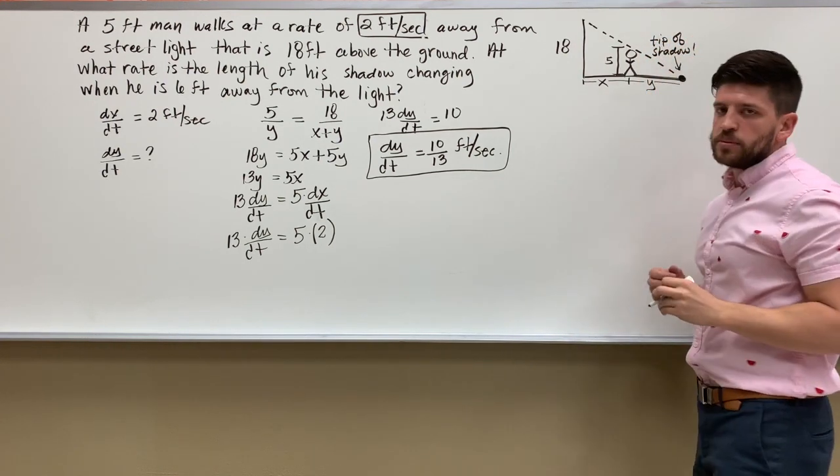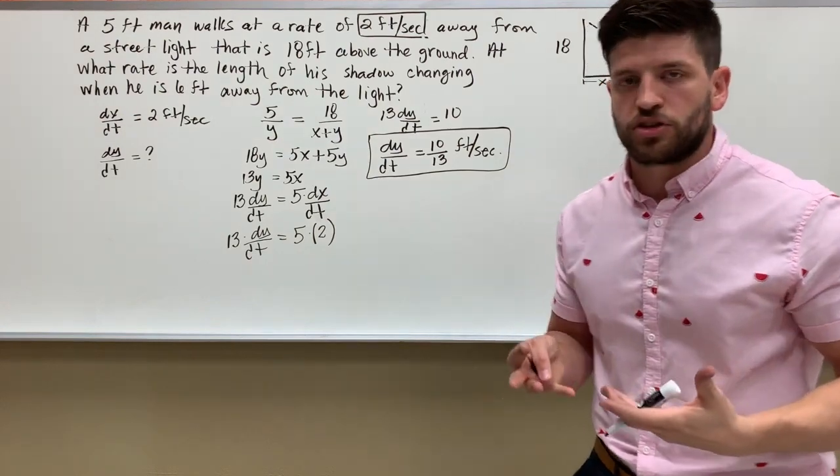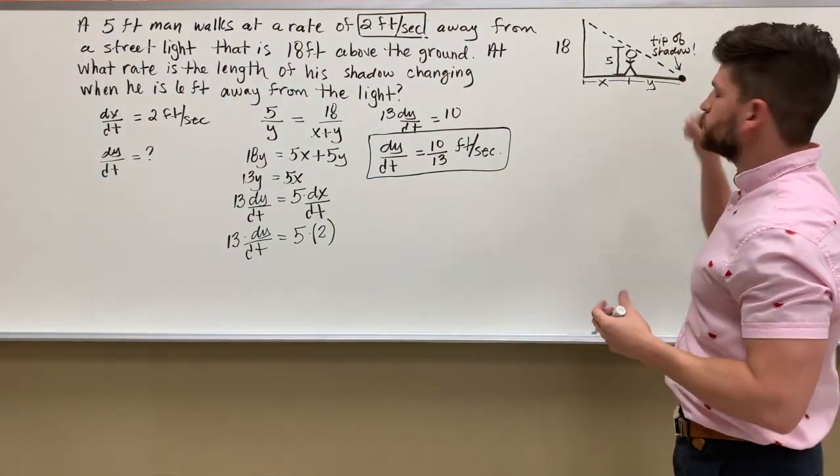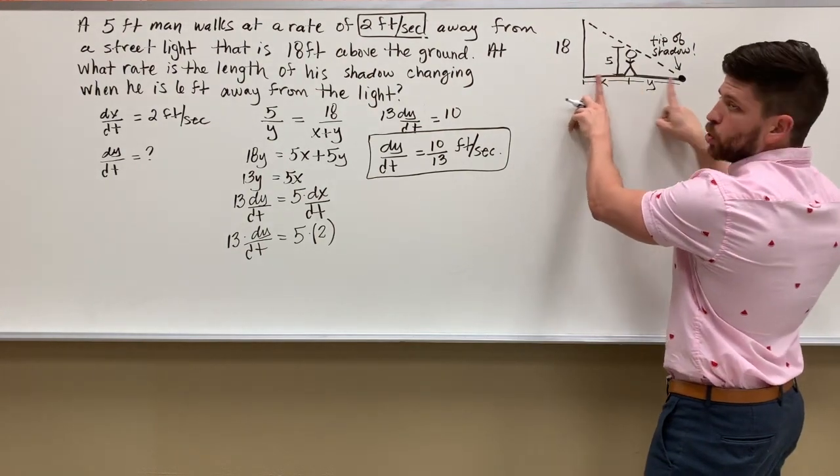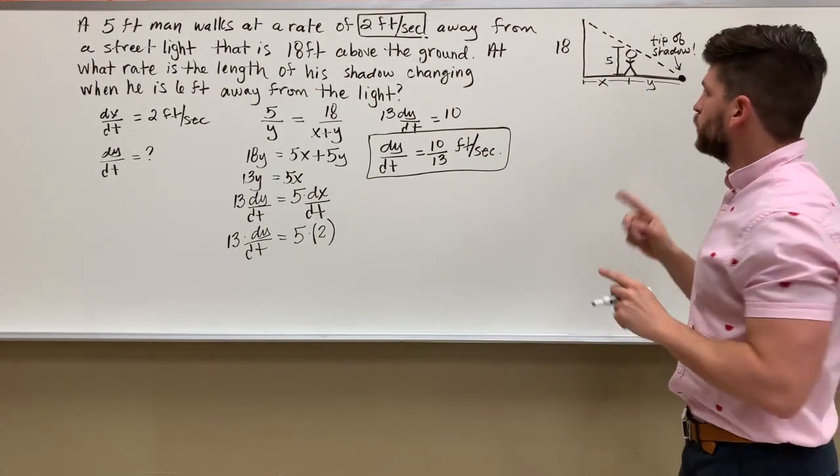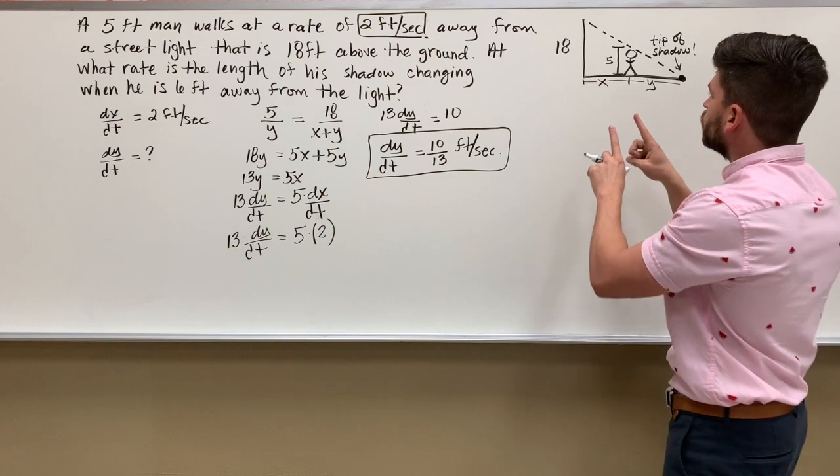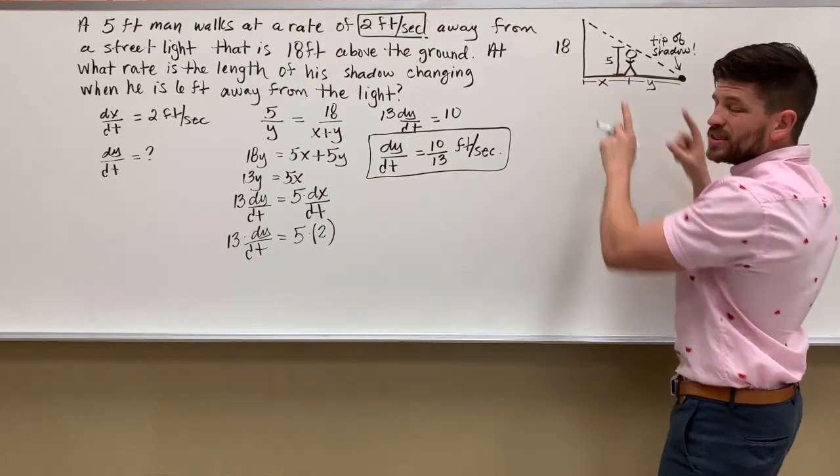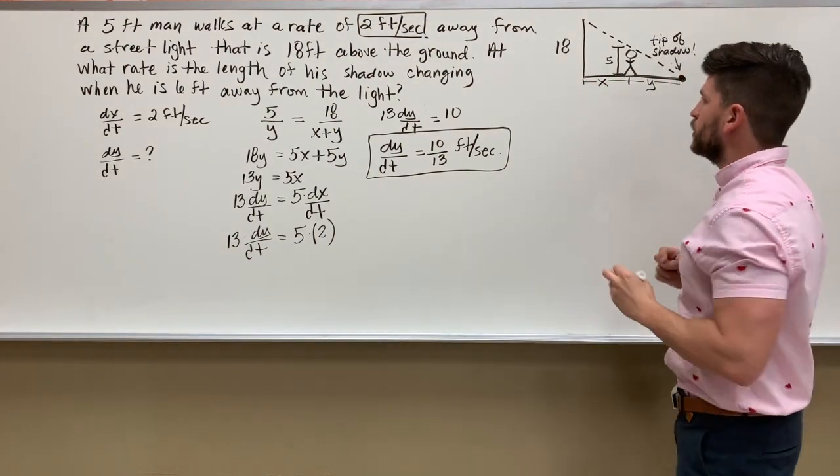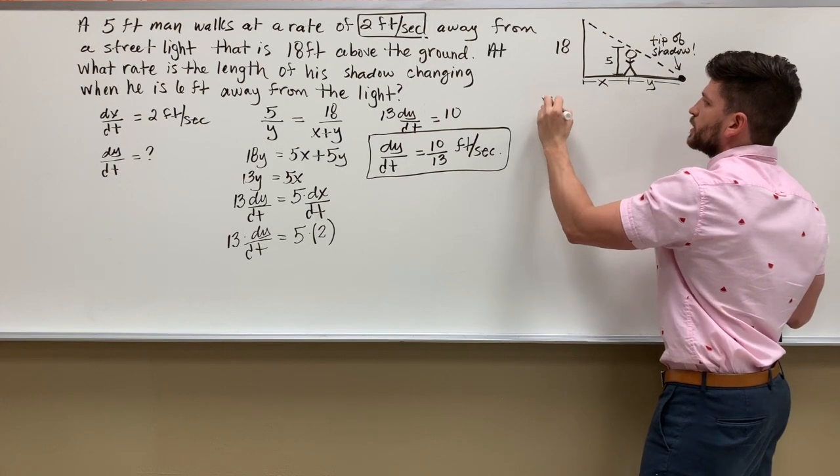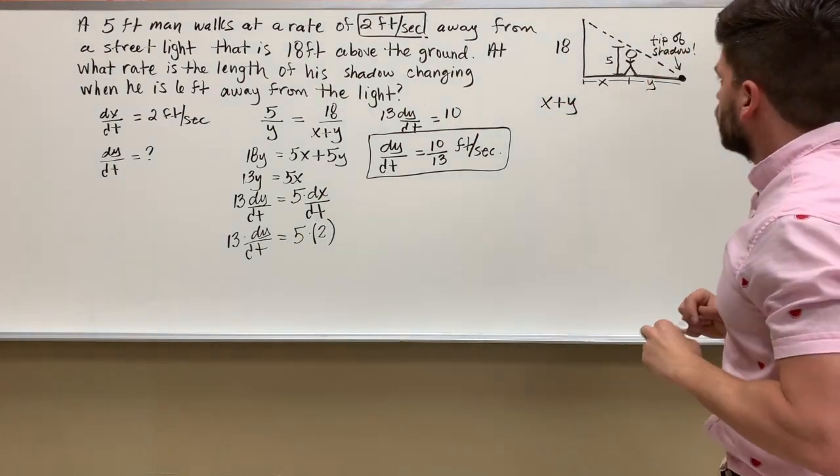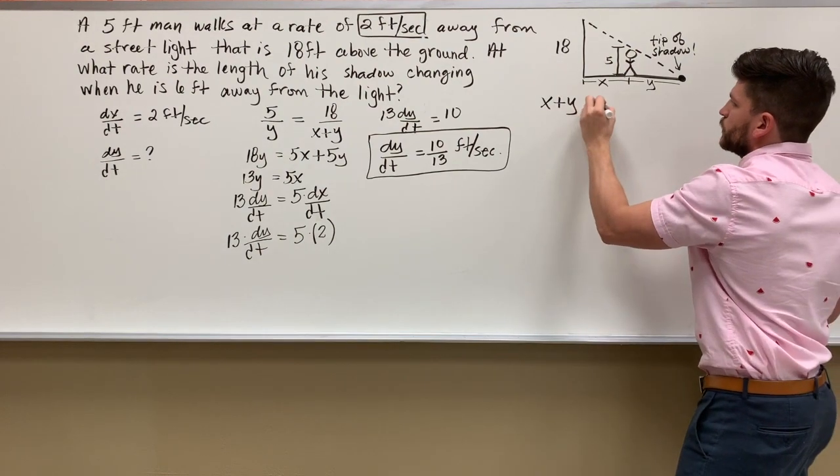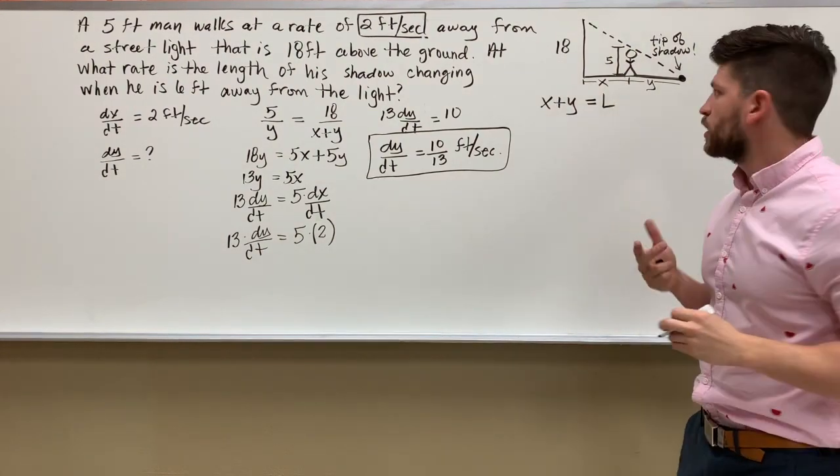So sometimes they will ask you this part b question: at what rate is this point changing? Well, this point is represented by this whole side length. So basically what they want to know is at what rate is that whole side length changing. So that whole side length is x plus y. All right, and you can call this whatever you want - you can call it l.